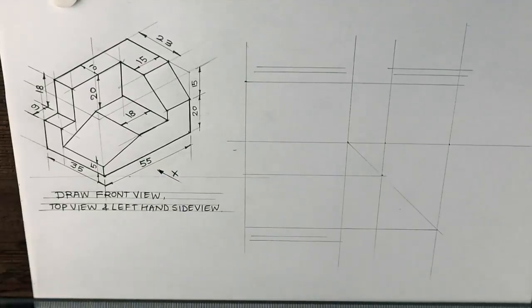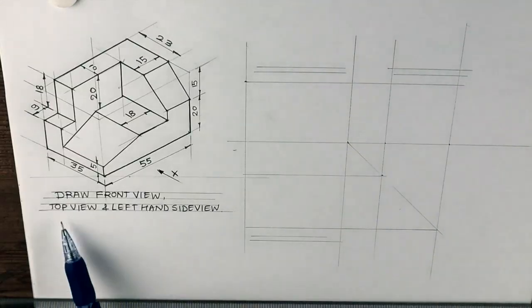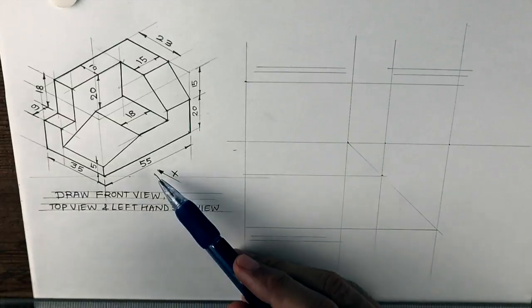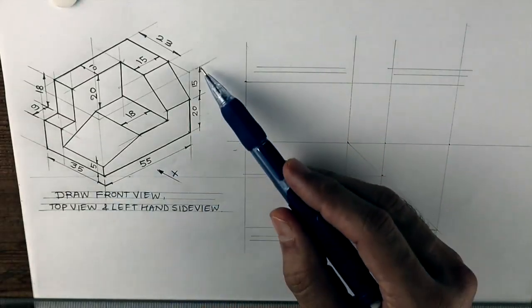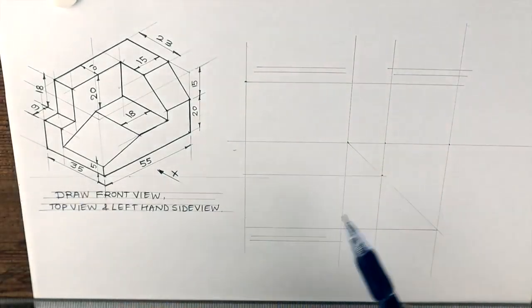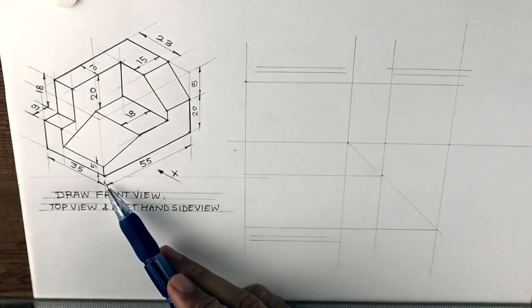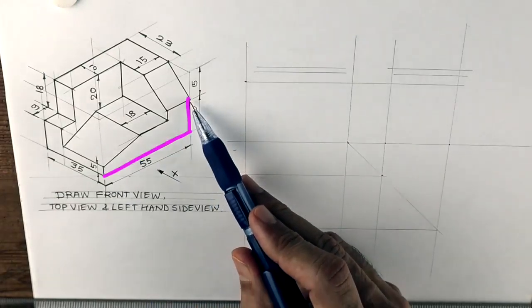Welcome to technical drawing. In today's orthographic question, we will see how to draw front view, top view, and left-hand side view in first angle method. When the observer sees from the front, you can see length 55, height 35, and width 35. So we'll draw the layout accordingly. In front view, he can see this part.